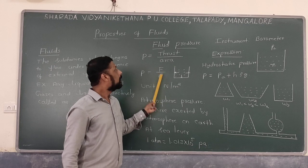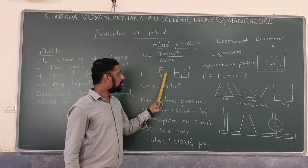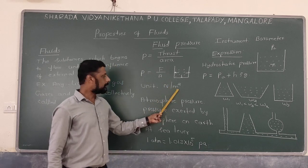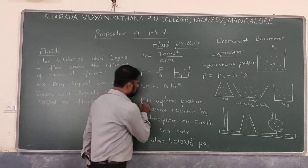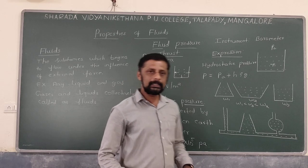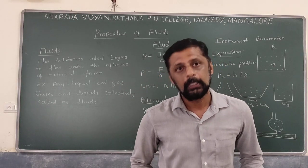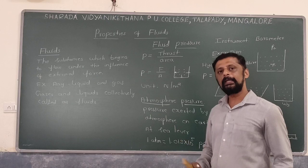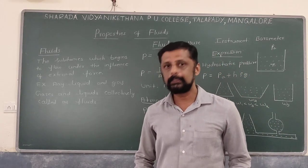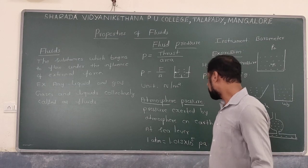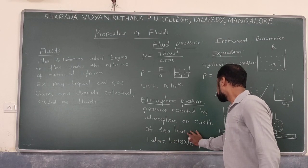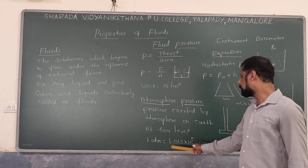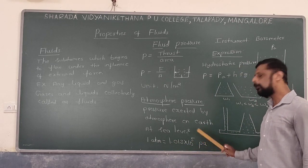The SI unit of force is Newton and the SI unit of area is meter squared, giving Newton per meter squared. Next, atmospheric pressure. The earth is surrounded by a gaseous envelope called the atmosphere, which also exerts pressure on the earth called atmospheric pressure. At standard sea level, its value is 1 atmosphere, which equals 1.013 × 10⁵ Pascal.